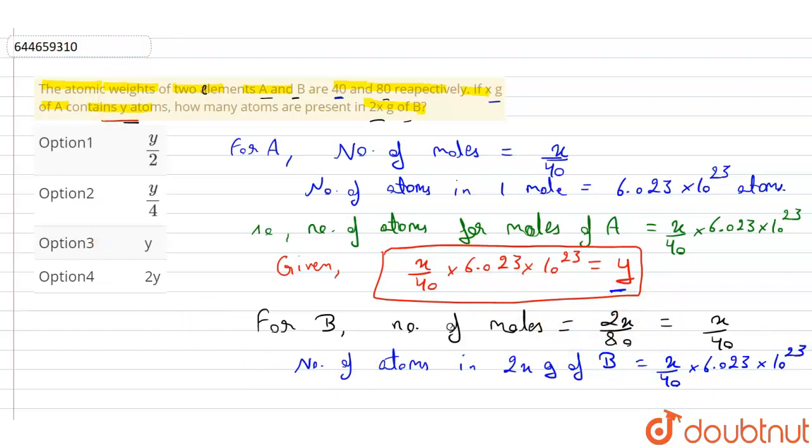this value. So we can say that therefore, the number of atoms present in 2x grams of B equals y.